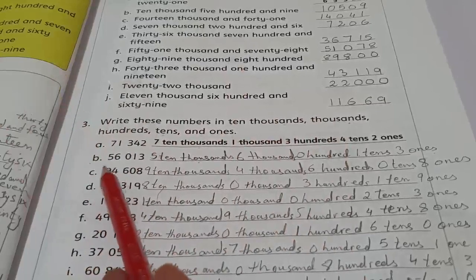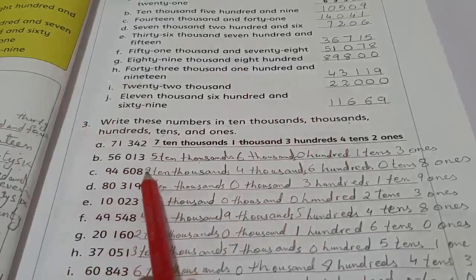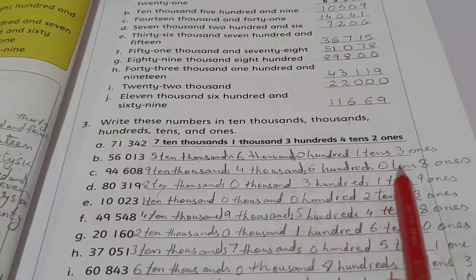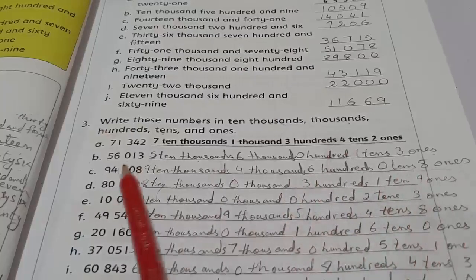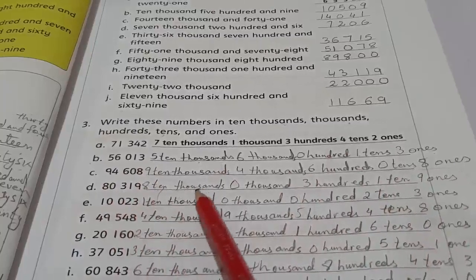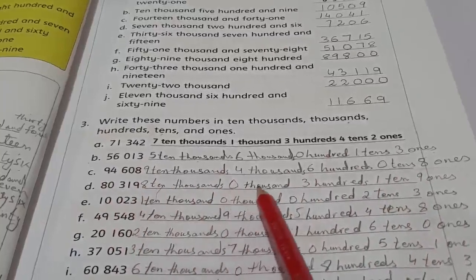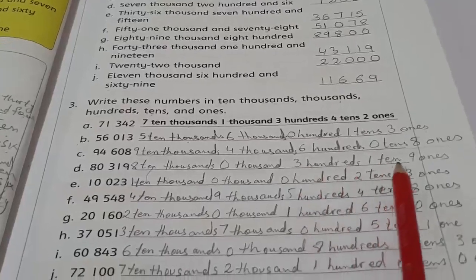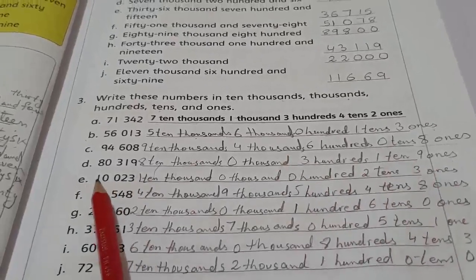C. 94608 - nine ten thousands, four thousands, six hundreds, zero tens, and eight ones. D. 80319 - eight ten thousands, zero thousands, three hundreds, one ten, and nine ones.